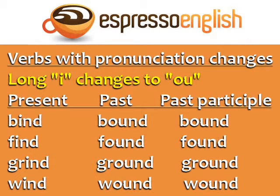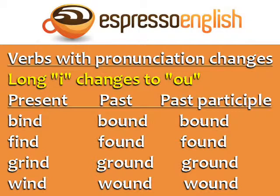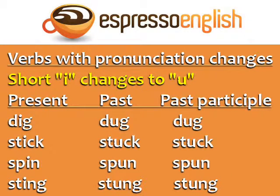Another group is when the long I changes to OU. Bind — bound — bound. Find — found — found. Grind — ground — ground. Wind — wound — wound. Short I can also change to U: Dig — dug — dug.